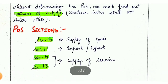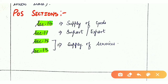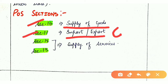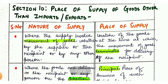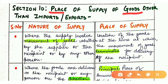Let's see which sections are covered under Place of Supply. There are basically 4 sections. Section 10 covers supply of goods within India. Section 11 covers import and export of goods — goods going in or out of India. Section 12 covers services where both recipient and supplier are in India. Section 13 covers services where one or more parties are outside India.